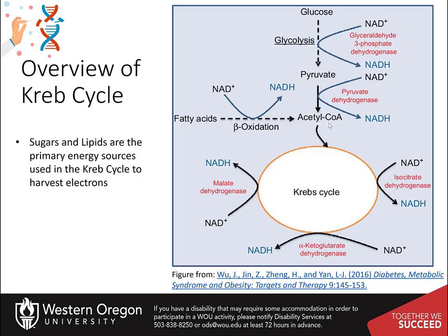Conversion of pyruvate to acetyl-CoA produces one molecule of carbon dioxide and NADH. Two more molecules of carbon dioxide are released during the Krebs cycle and three more molecules of NADH are produced. For each molecule of glucose metabolized, two pyruvate molecules are formed. Thus, a total of eight NADH are formed in the mitochondria during aerobic oxidation of pyruvate: two in the conversion of pyruvate to acetyl-CoA, and six more in the Krebs cycle.